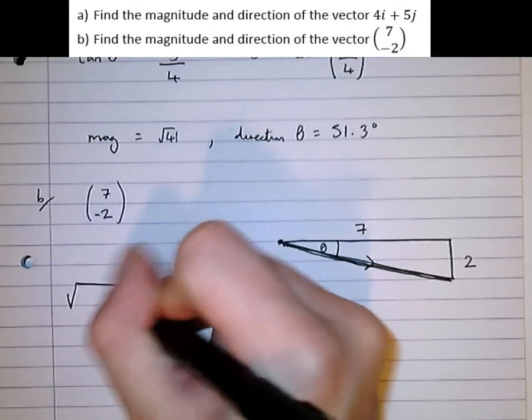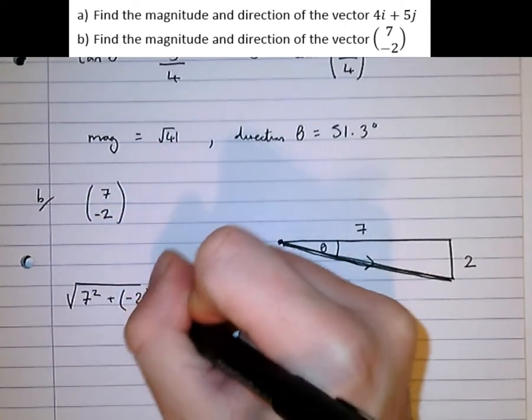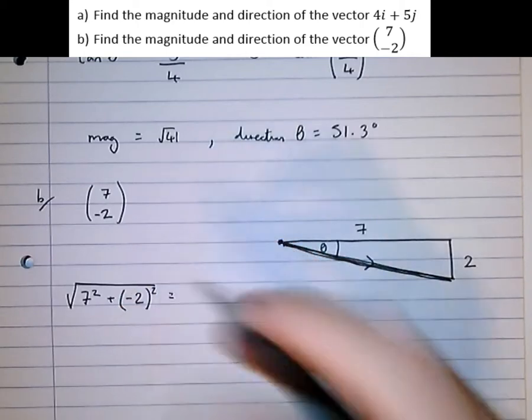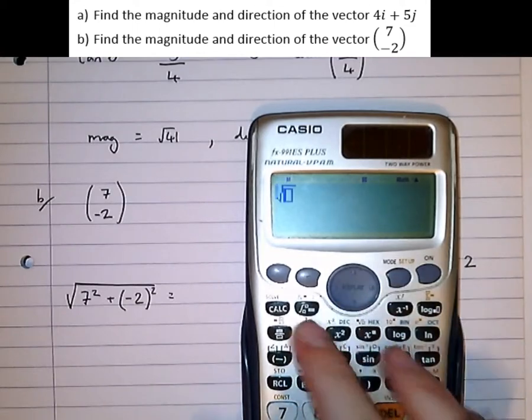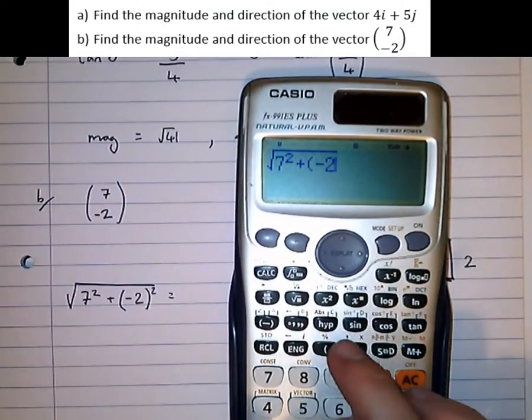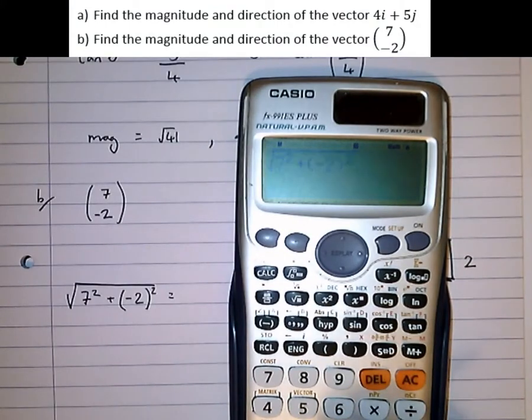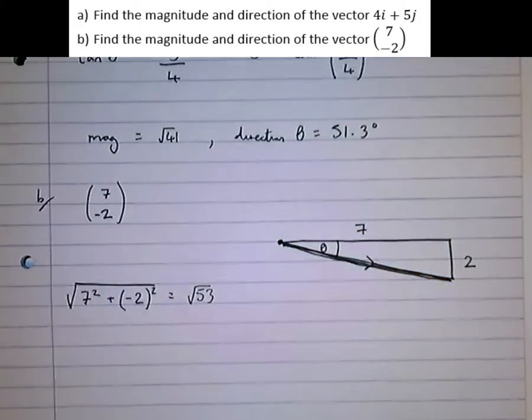The magnitude is root of 7 squared, plus, in brackets, minus 2 squared. Because all of that, that's going to need to be squared. So 7 squared, plus minus 2 squared, which is equal to root of 53. And that's the magnitude.